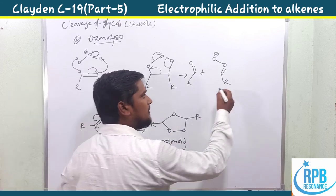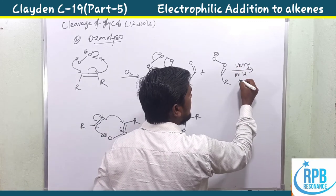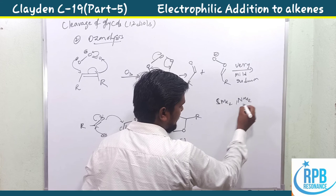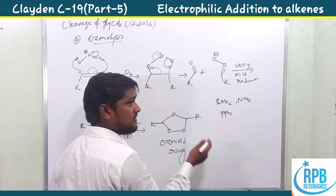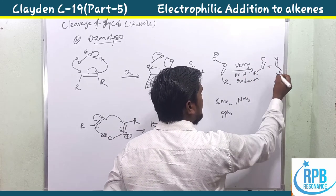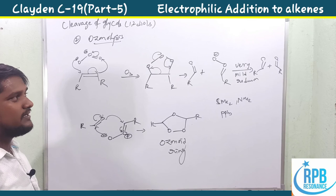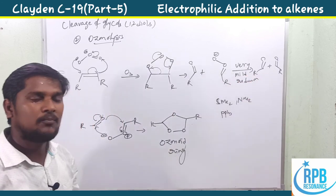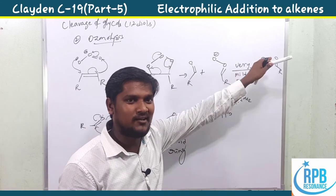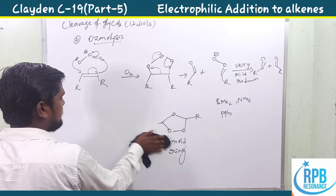By using mild reducing agents — dimethyl sulfide (SMe2), trimethylamine (NMe3), or PPh3 — we can easily get the corresponding carbonyl compounds from the ozonide ring. This is similar to the dihydroxyl intermediate; finally we get carbonyl compounds. Based on the adjacent substituents of the olefin, we get either aldehydes, ketones, carboxylic acids, or alcohols.